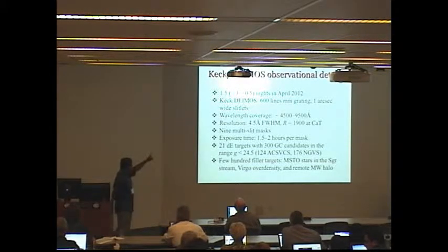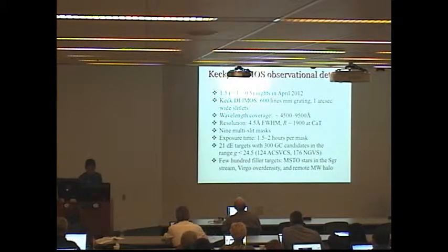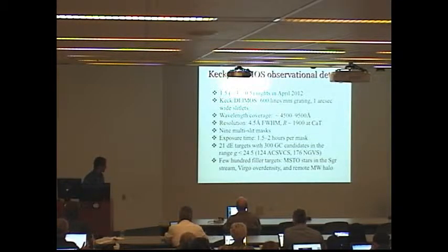I would like to think part of that is because of how carefully we planned this survey, but some of it is just chance. So we used the 600 line grating. We covered a pretty wide wavelength range from H beta through the calcium triplet. These are what would be considered medium resolution spectra, R of about 2000. We had nine slit masks targeting one and a half to two hours per mask.